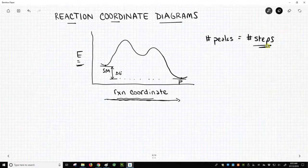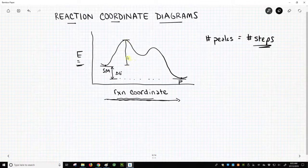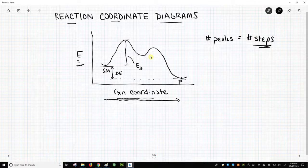Now, each step will have its own barrier. Just because this reaction is favorable because our delta E is negative, there's still an energetic barrier from the starting material to that peak, and this is our energy of activation. And since we have two peaks, we have two steps. Each step has its own energy of activation.